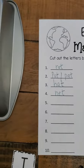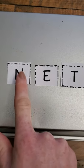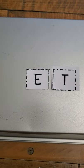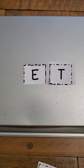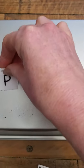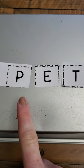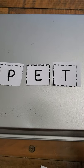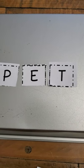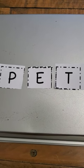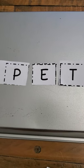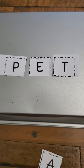So I'm going to write 'net' over there. Now I'm going to drop the N and put on P — pet! Pet is a word. A pet is an animal that you have at home that you care for.